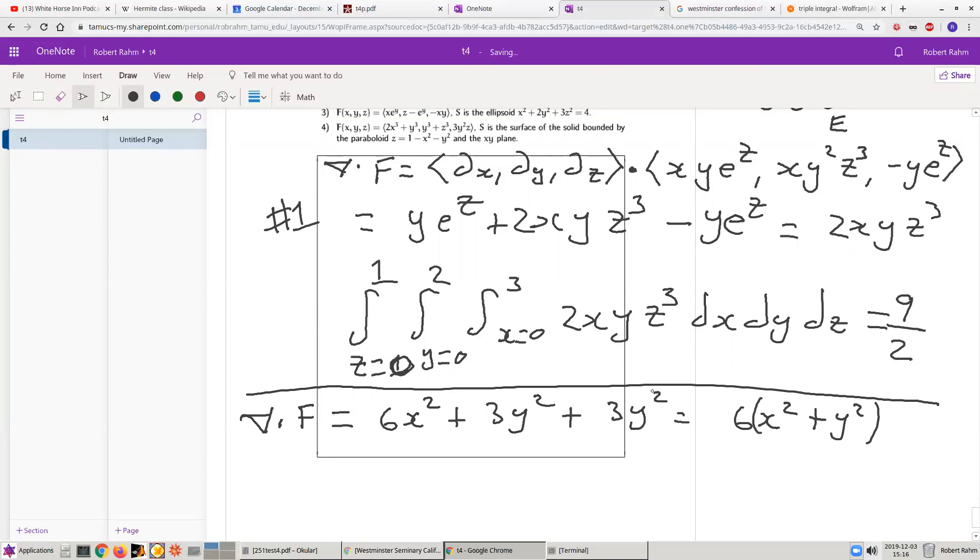Okay, so we're going to integrate this over the volume that is bounded by this region. S is the surface of the solid bounded by this paraboloid. Okay, and the xy plane. So this is a downward facing paraboloid.